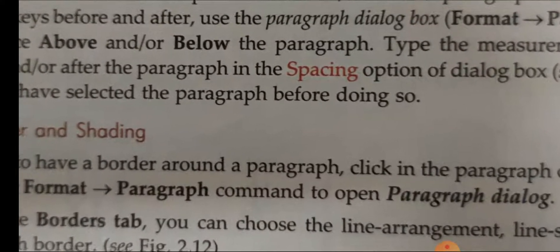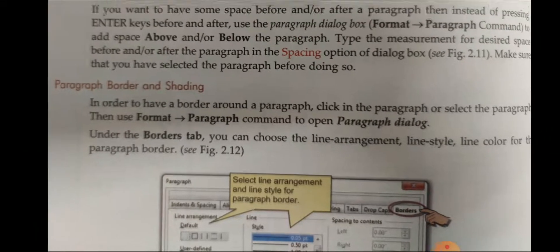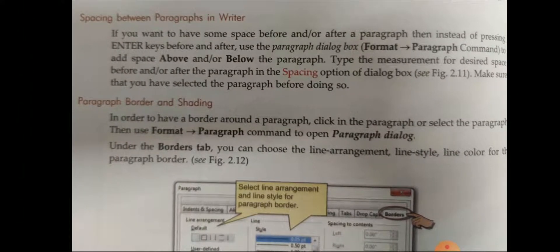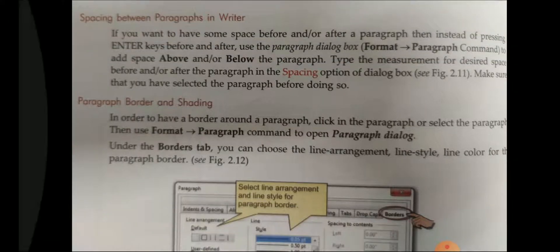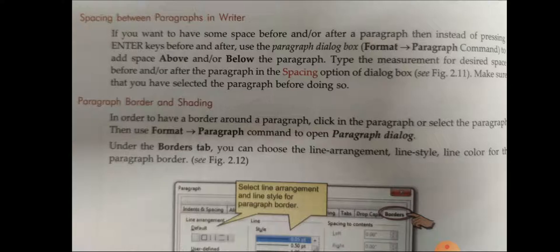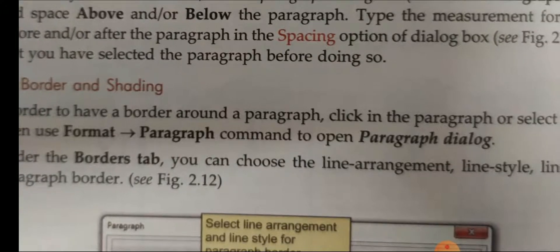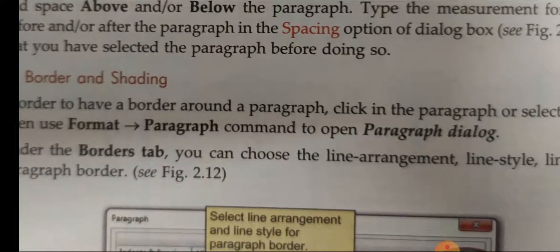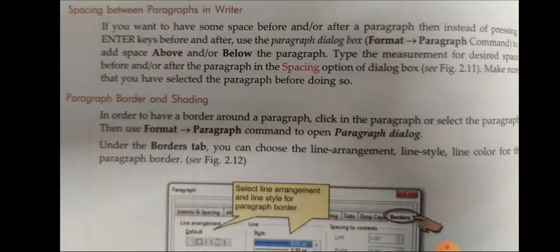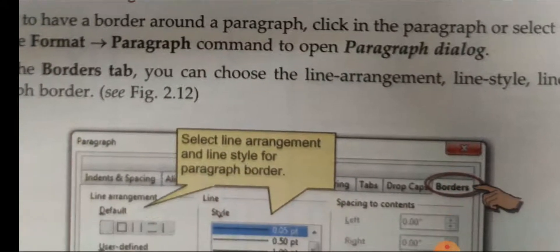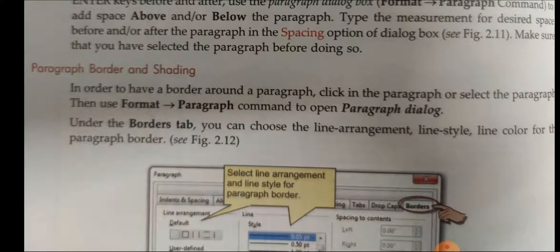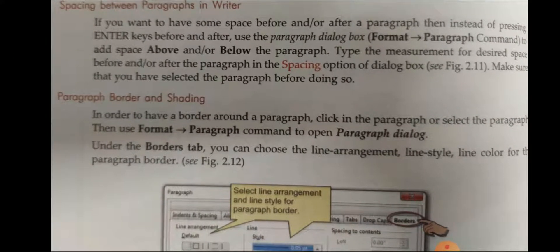Paragraph border and shading can also be changed — we can give a border to a paragraph or change its shading. This is all practical work, so when you are working with this, you can follow it well. For changing paragraph settings, go to the format menu and click on paragraph. The paragraph dialog box will appear with all the tabs given there. You can use those tabs to make changes, and you can see the change in the document when it is printed.